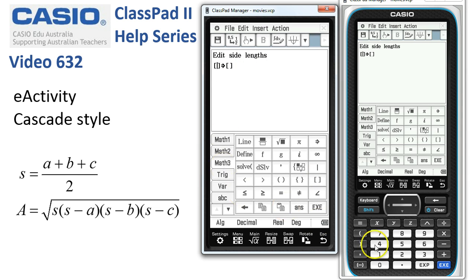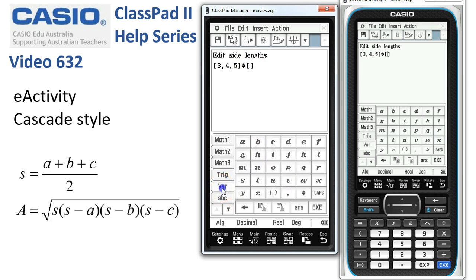Here we go. The numbers. Let's use 3, 4, 5 and we'll store these into the variables, heading off to the variable tab. A, B, C. So this is a great way to very quickly change the three sides of our triangles later on.